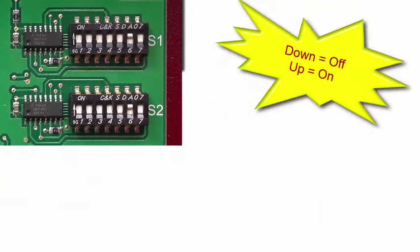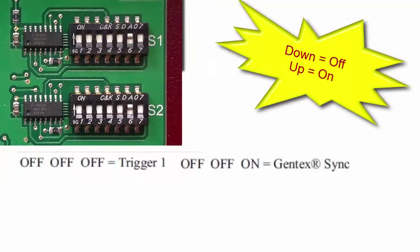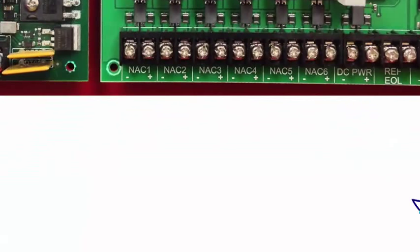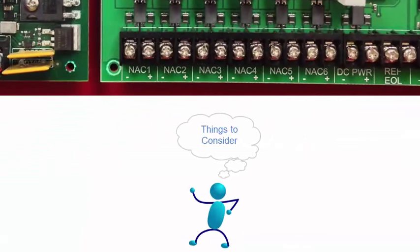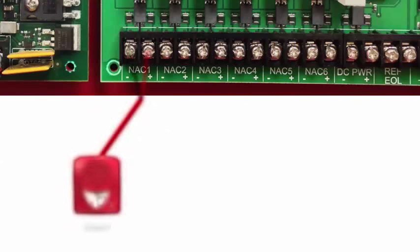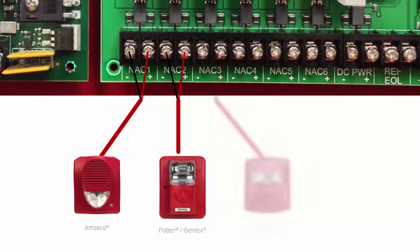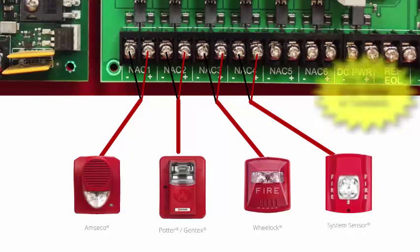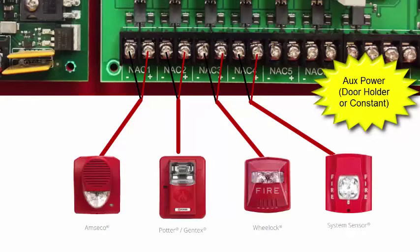As you can see here, these two notification circuits for NAC 1 and NAC 2 are set up to be triggered by input 1 and to be Gentex sync. Some things to consider when programming the PSN power supply notification outputs. Each circuit can be programmed individually. So you could have one circuit of AMSECO, one circuit of Gentex, one circuit of Wheelock, and one circuit of system sensor. And all your strobes would synchronize. That's called quadrasync. In addition to that, any of those circuits could be DC power circuits which can be door holder or constant power.